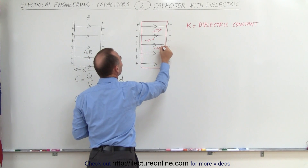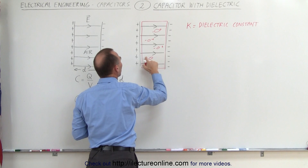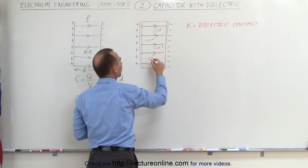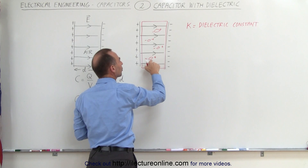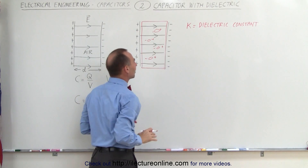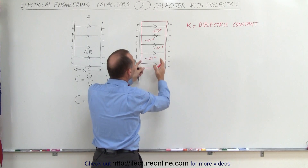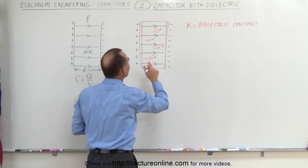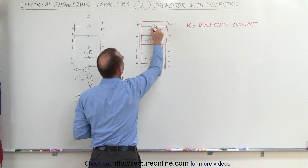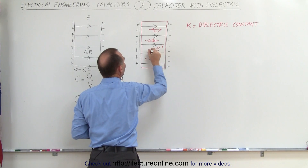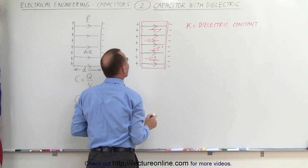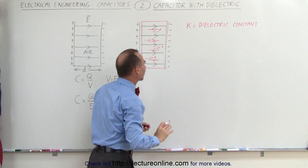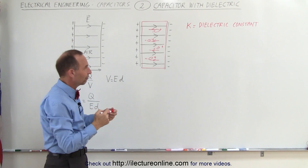Because of that, all the molecules will get an orientation where the negative side is more towards the positive side of the capacitor and the positive side of the molecules is more towards the negative side. This causes an electric field to be set up by the polarity of the molecules inside the dielectric — an electric field pointing in the opposite direction, setting up an opposing dielectric field.